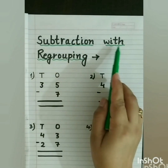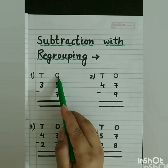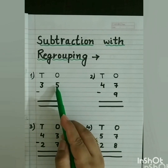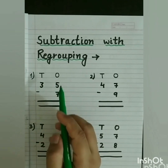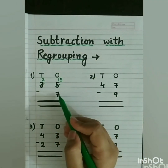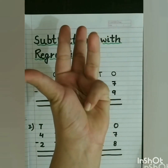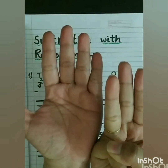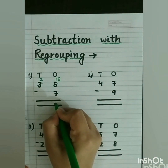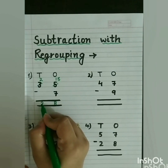Our next topic is subtraction with regrouping. First sum: 35 minus 7. We start from the ones place. 5 minus 7 is not possible, so we borrow from 3. 3 becomes 2 and 5 becomes 15. After 7, count till 15: 8, 9, 10, 11, 12, 13, 14, 15 — that is 8. So 15 minus 7 is 8. Now 2 has no number to subtract, so we write 2 down. The answer is 28.